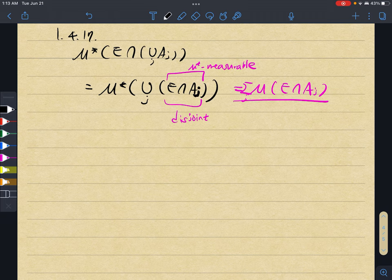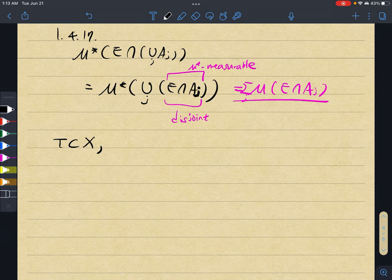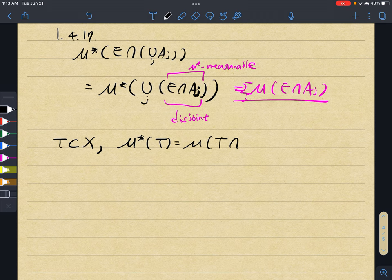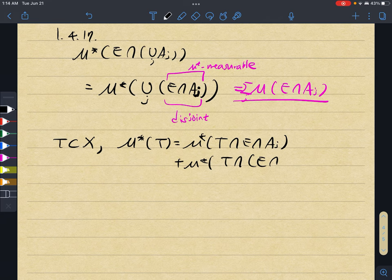So what we do is, for some subset T, we need to show that μ*(T) = μ*(T ∩ (E ∩ Aj)) + μ*(T ∩ (E ∩ Aj)^c).